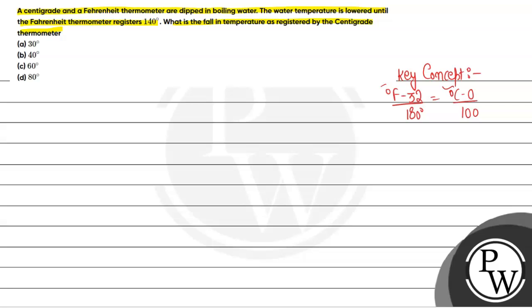Now, according to the question, we have centigrade and Fahrenheit thermometer and we have both in boiling water. Suppose we have boiling water here. This one is the Celsius scale and this one is the Fahrenheit scale. According to the question, the temperature which we have given...